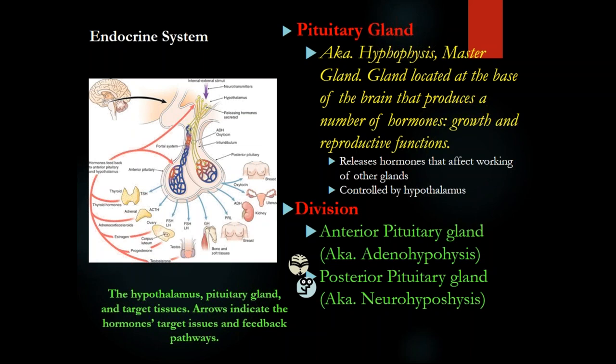Continuing G-P-TAL: L is the luteinizing hormone — produces ovulation, target organ is the ovary. F is the follicle-stimulating hormone — target organ is the ovary — stimulates proliferation of follicles that produce estrogens. In total, the anterior pituitary gland has six hormones.